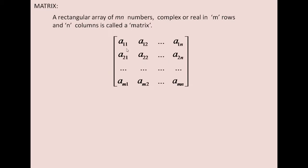This is a matrix: A11, A12, A1N, A21, A32, etc., up to AMN. These are called elements of the matrix of order M cross N.